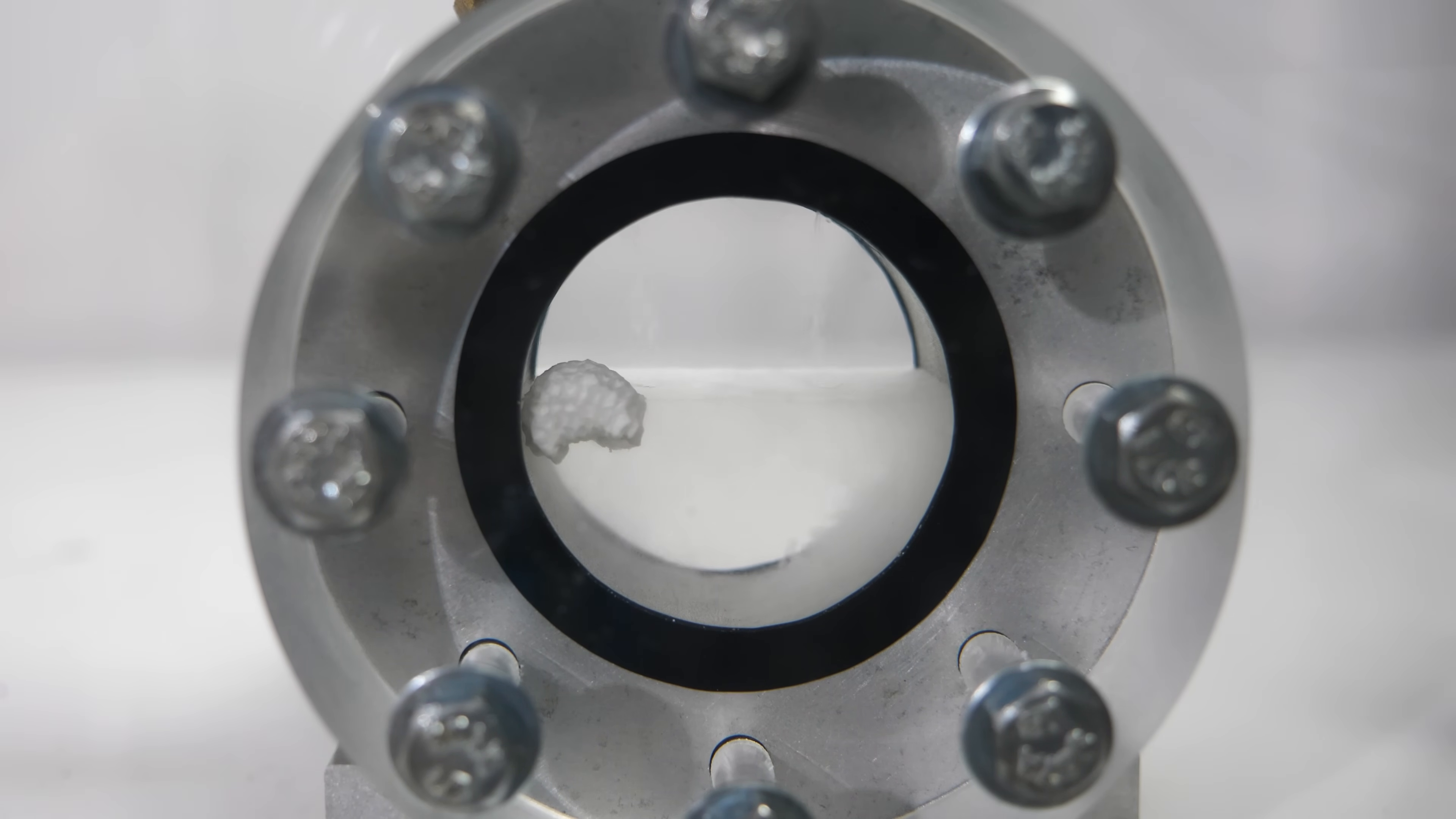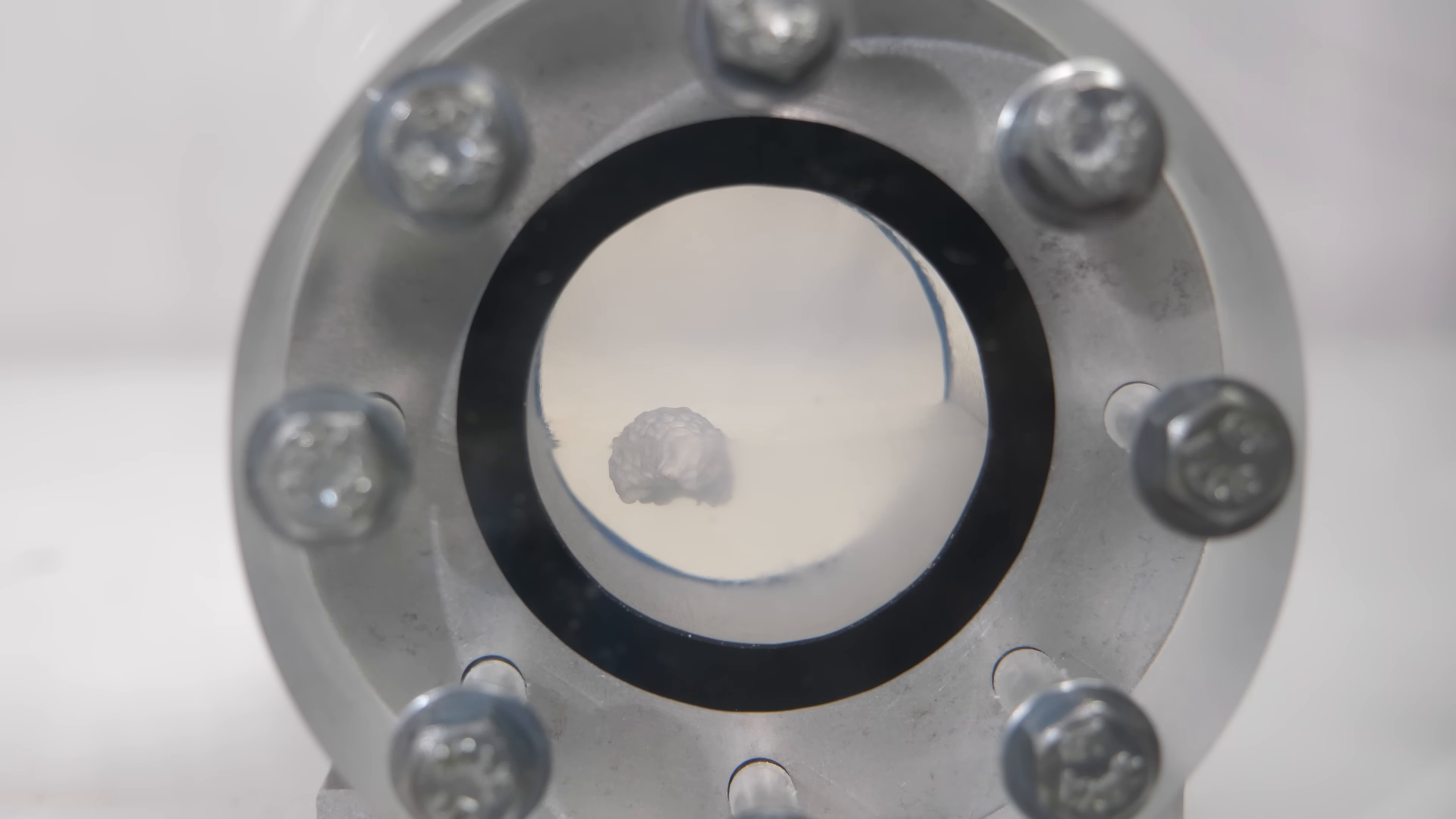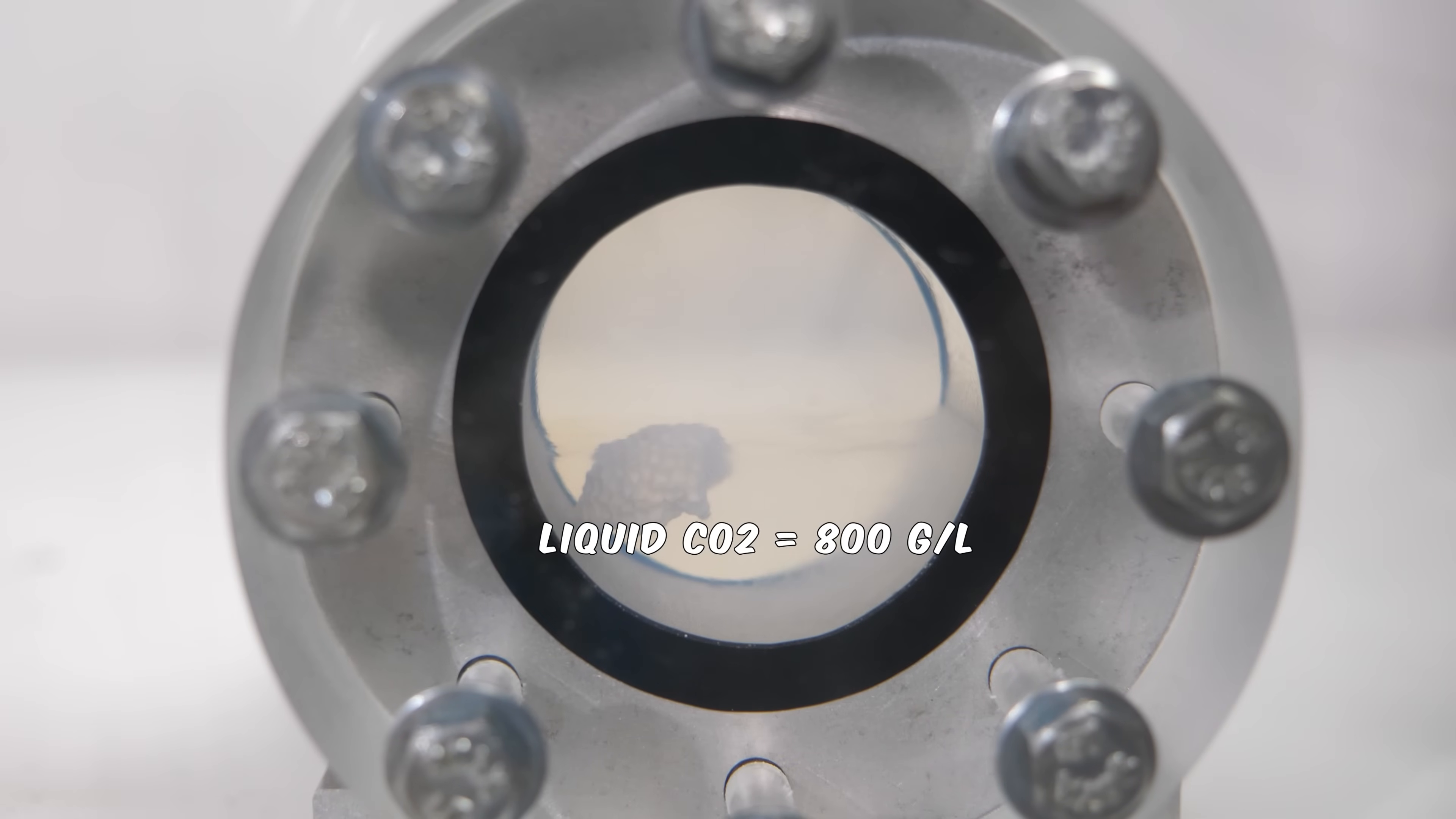But then once it becomes supercritical, these two states suddenly become one. So it would make sense that the density of the remaining fluid should be some average of these two states. And sure enough, if you look up the density of liquid CO2, it's around 800 grams per liter at room temperature. But then once it reaches its critical point, it suddenly drops to just above 400 grams per liter.